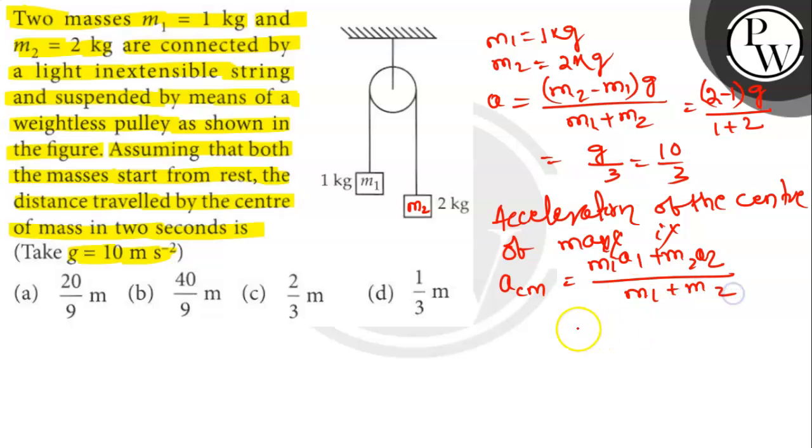That equals 1 times minus A plus 2 times A divided by 1 plus 2, which gives A by 3.